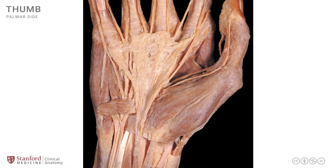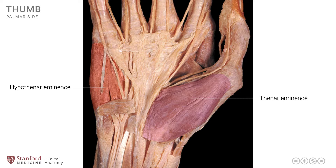In this lesson we will review the muscles that participate in the formation of the thenar group of muscles. Let's begin by looking at a superficial dissection photograph of the palm of the hand. This is the hypothenar eminence at the base of the little finger, and the thenar group of muscles form the thenar eminence. These muscles are arranged in two layers like in many other anatomical locations.